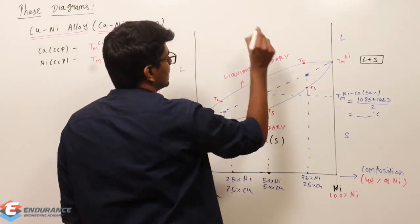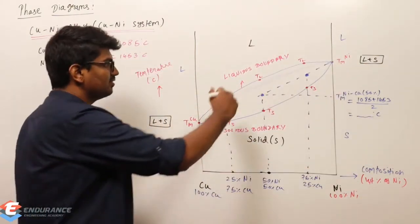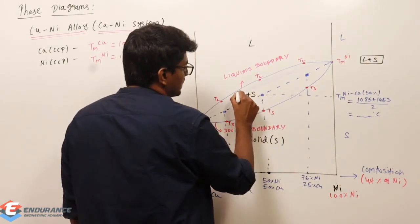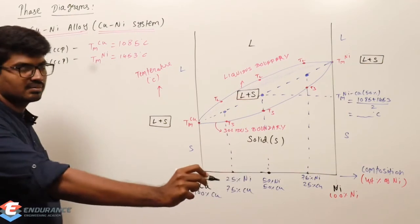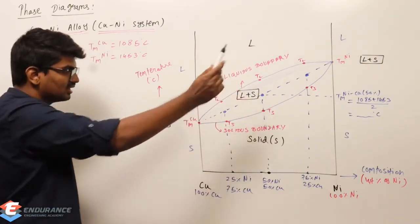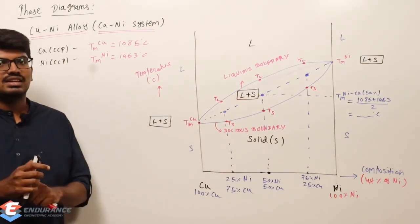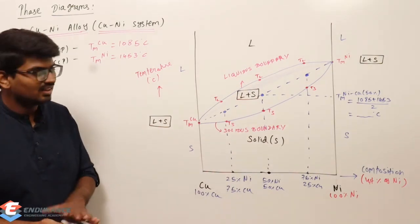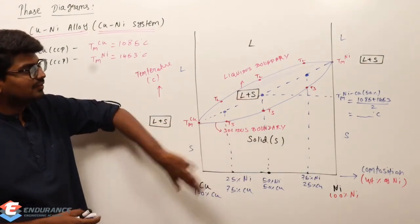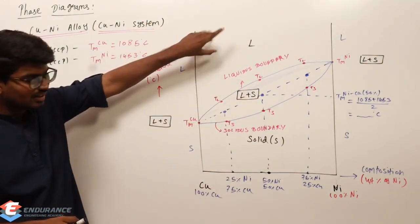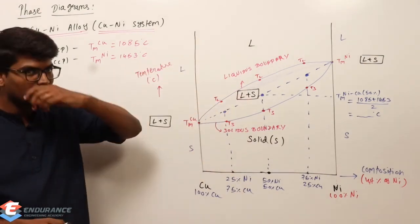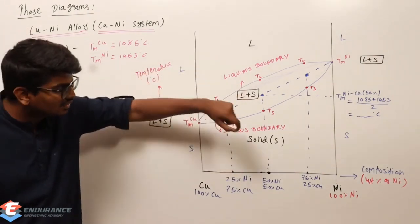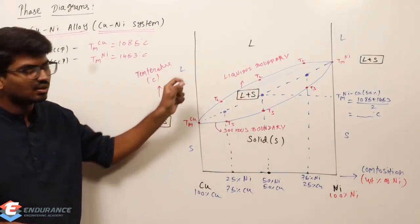Above the liquidus boundary it is completely in liquid phase. Between TL and TS — that is, between the liquidus and solidus boundaries — it exists as liquid plus solid in equilibrium. You take any composition: if that lies between TL and TS it is going to exist as liquid plus solid. This is my phase diagram — a diagram which represents the different phases which can exist when forming an alloy.